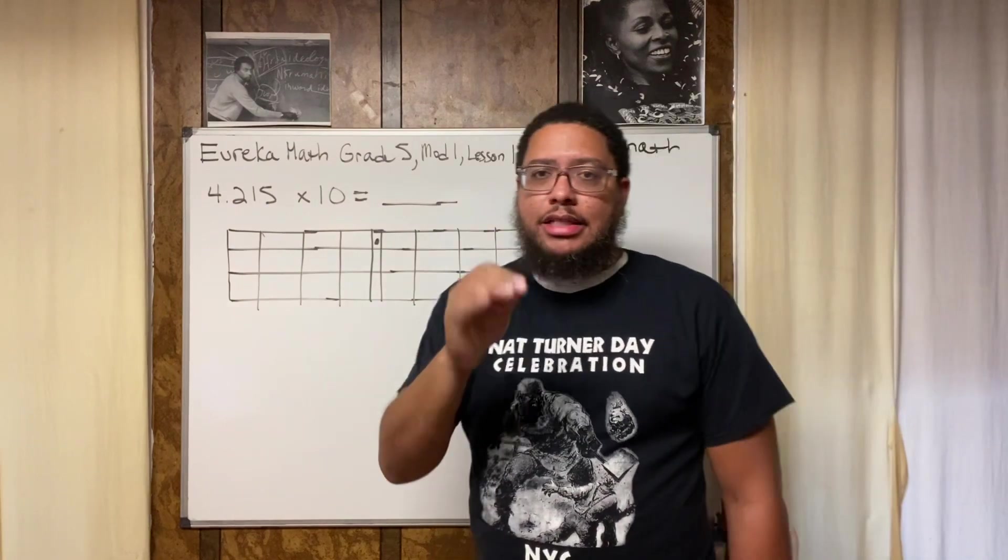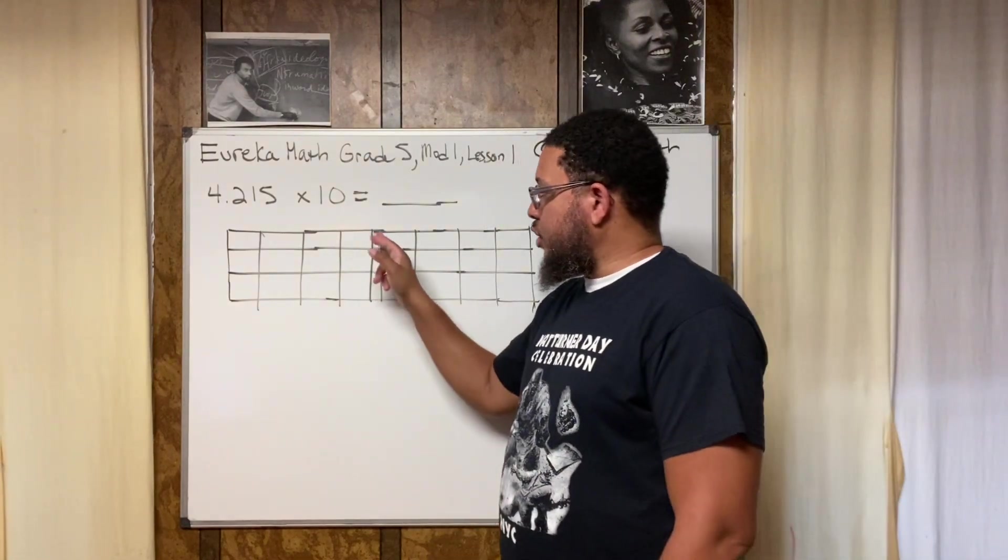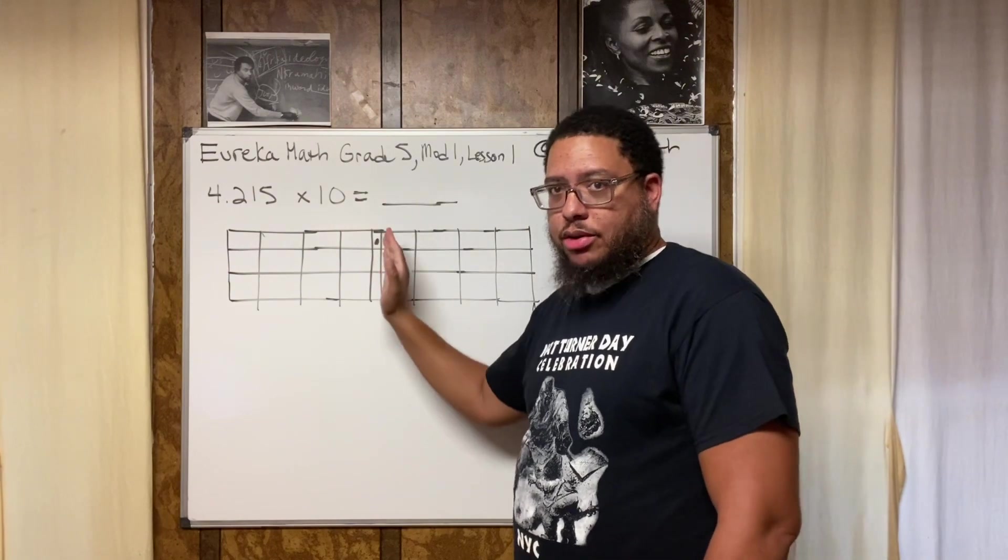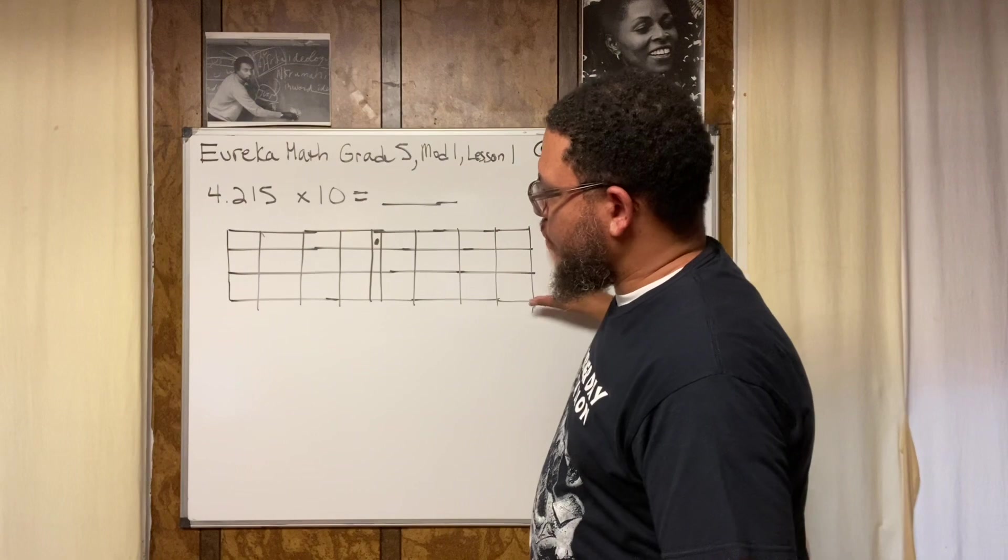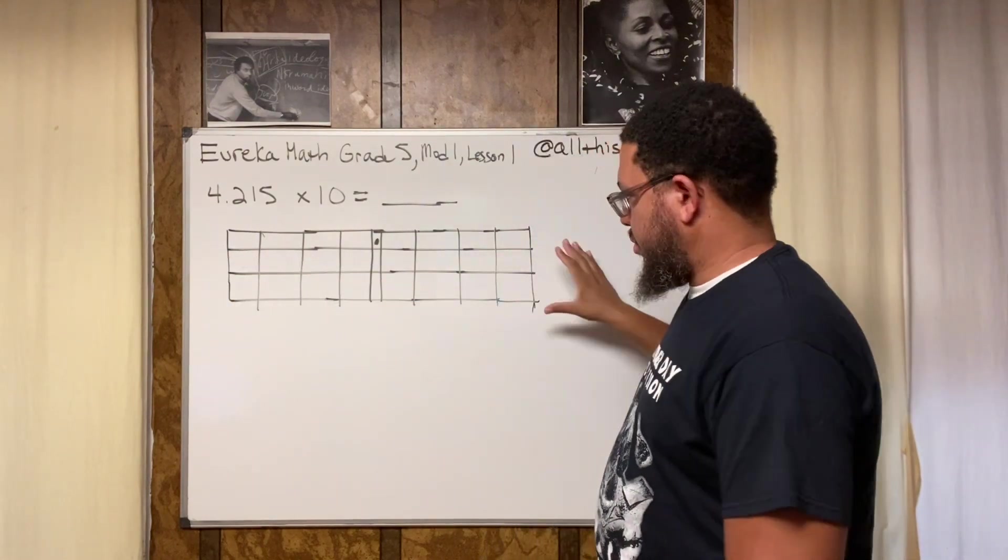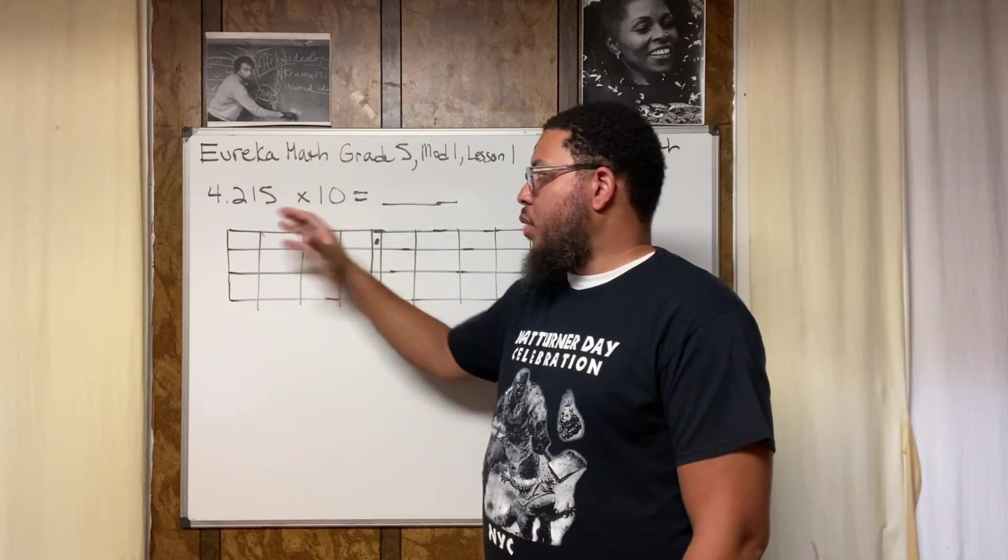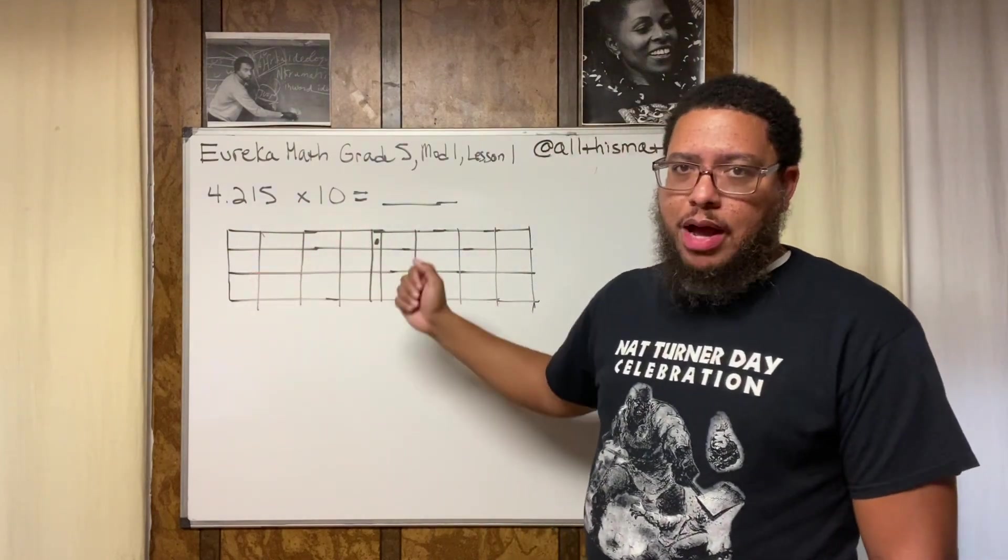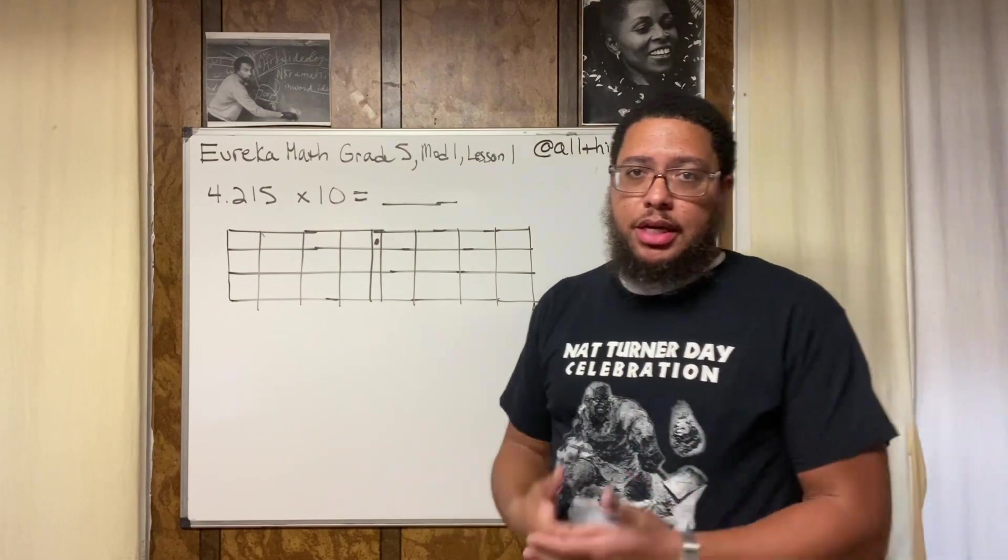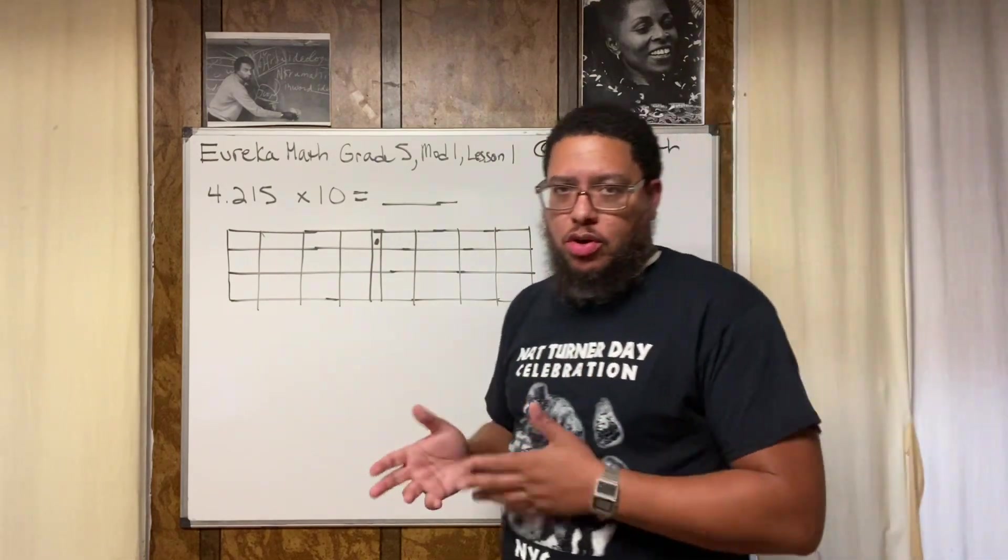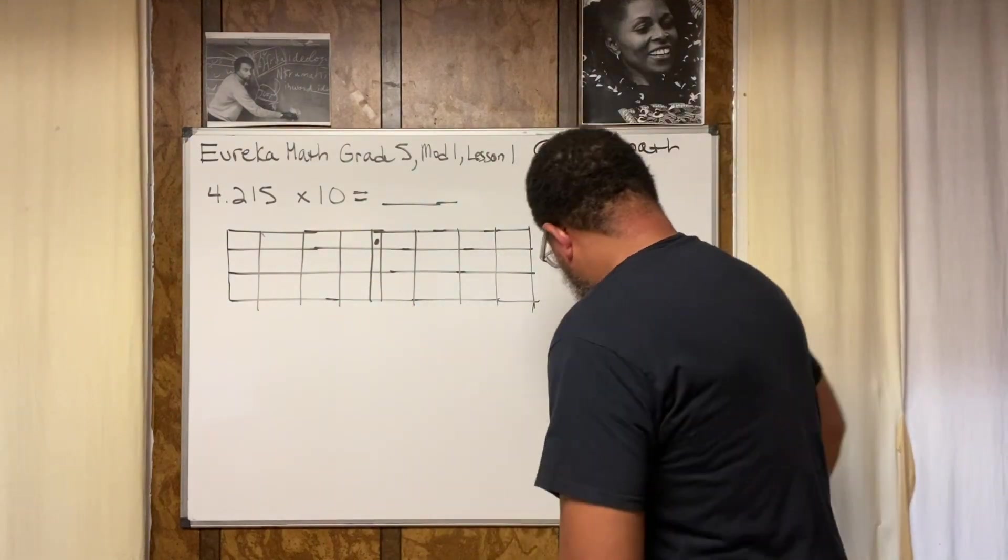Eureka has a different approach. What Eureka does is they say that the decimal point should remain standard and stationary. And this right here, in case you wonder what this is, this is what they call a place value chart. The way they approach this type of problem is different from the way many of us learned it many years ago, but it's not really, it's not difficult though. It's different but it's not difficult. So I'm going to show you how they want you to do it.